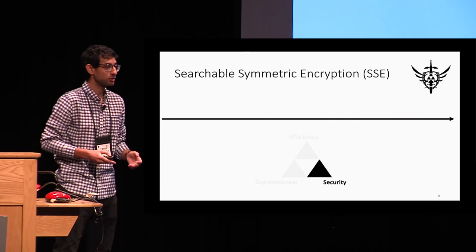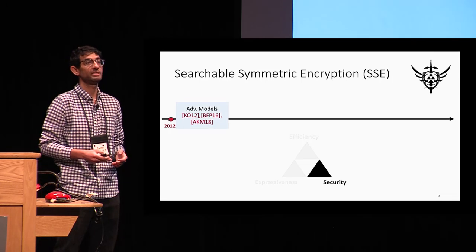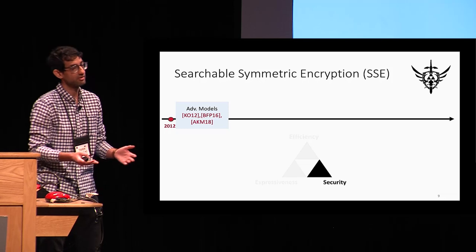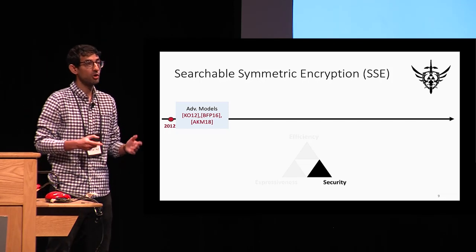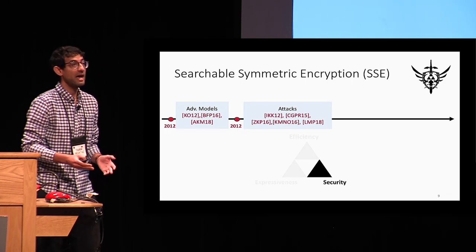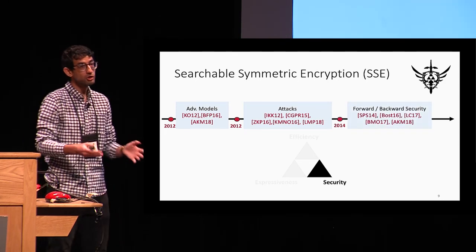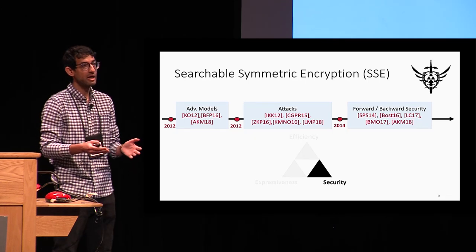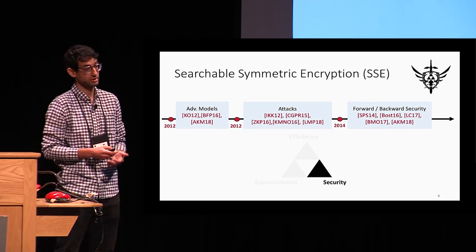With respect to security, there were a couple of works that investigated different adversarial models such as active adversaries and snapshot adversaries. There were also several works that investigated attacks on SSE, and recently there has been a lot of focus on how to design forward-secure and backward-secure SSE constructions.